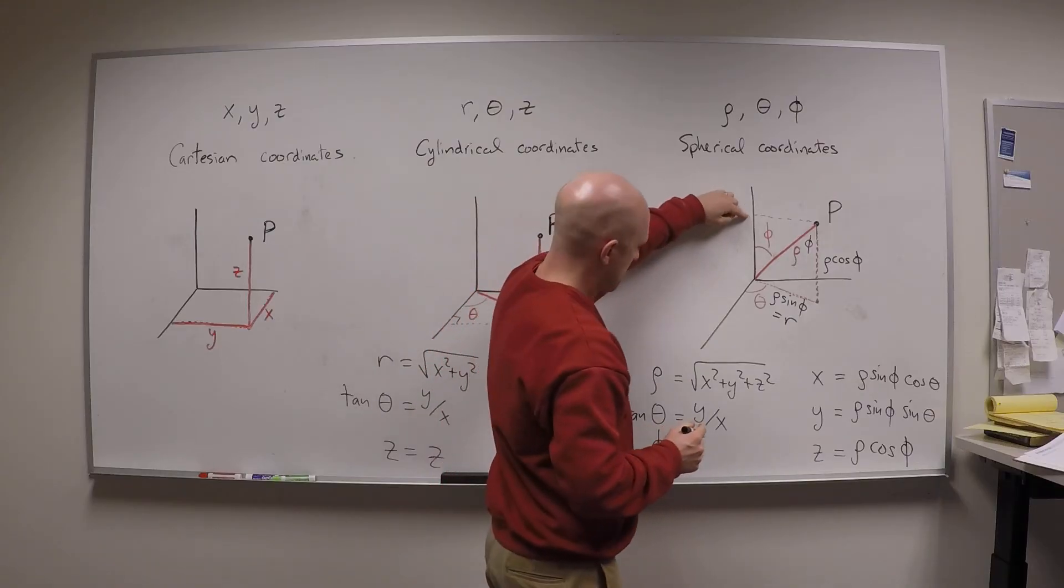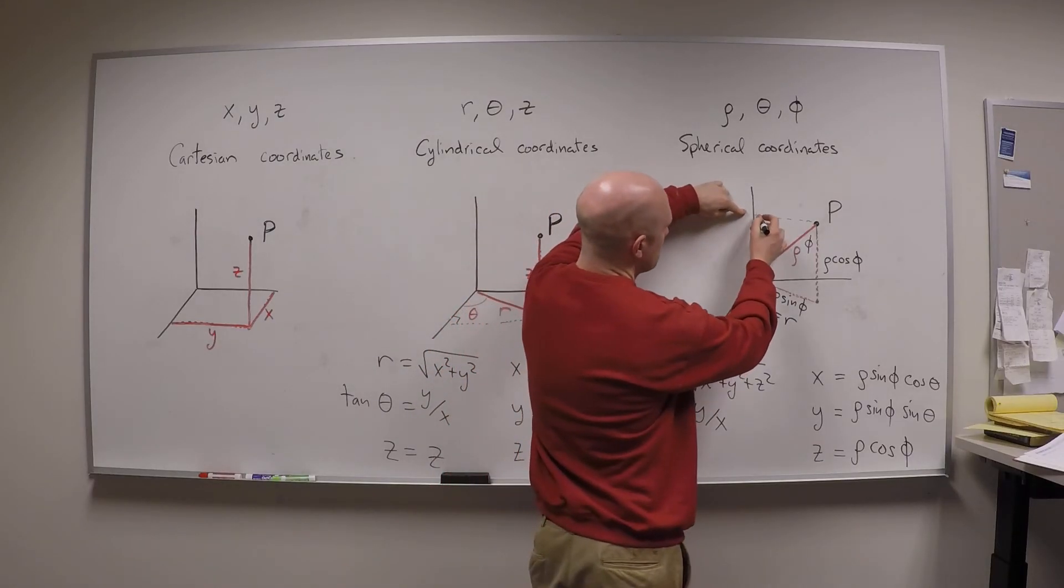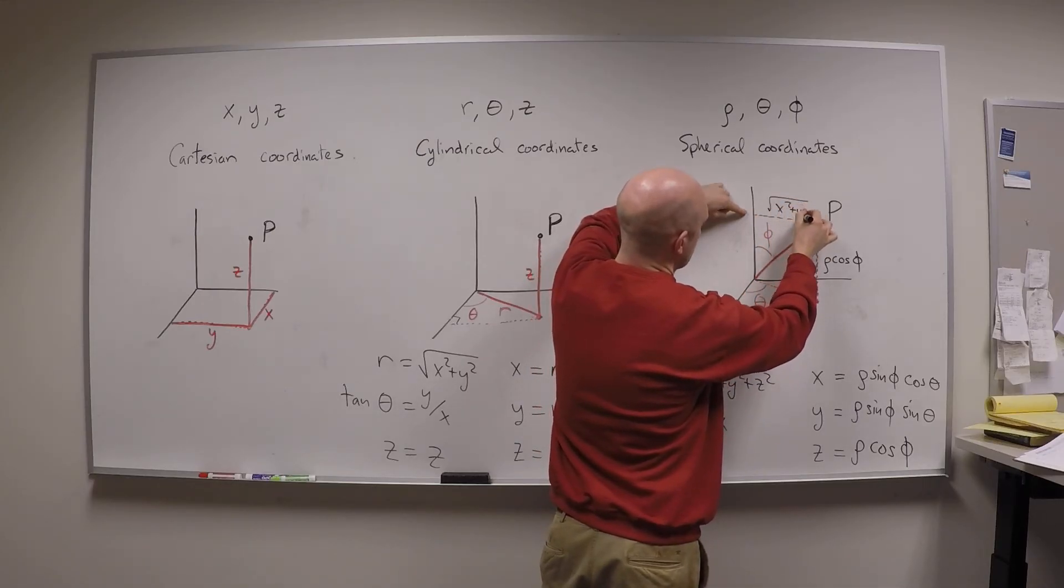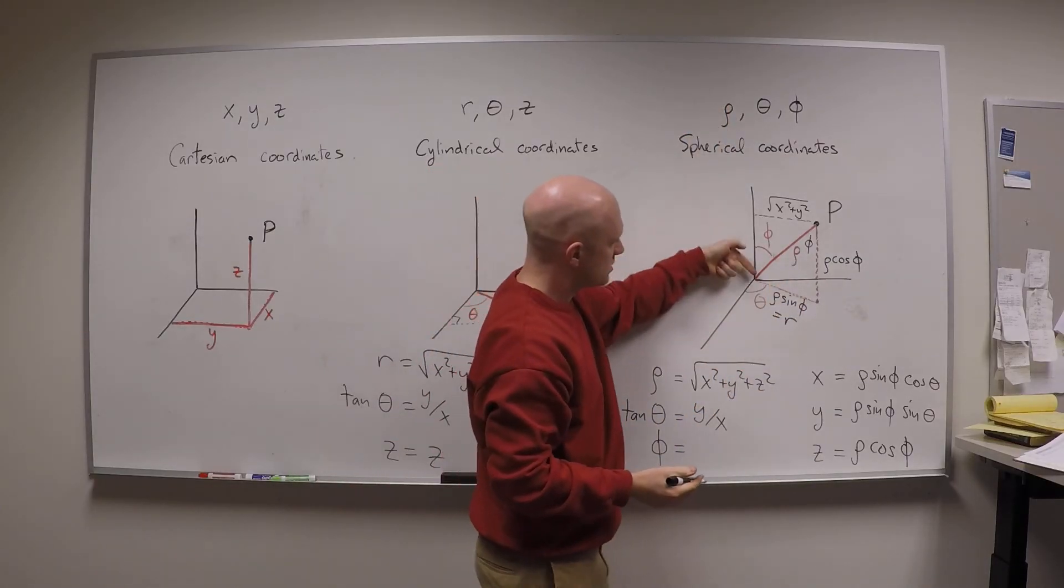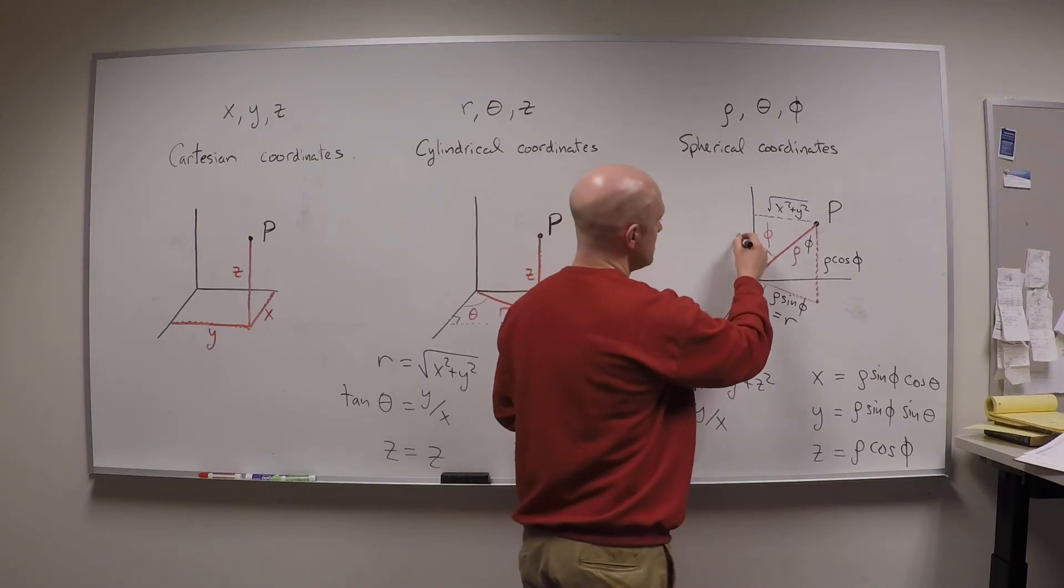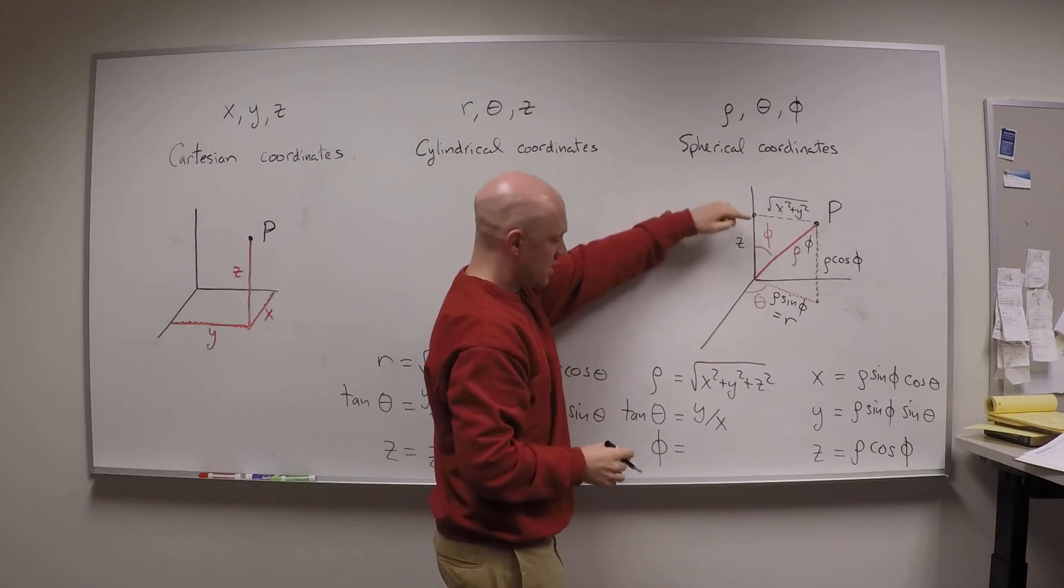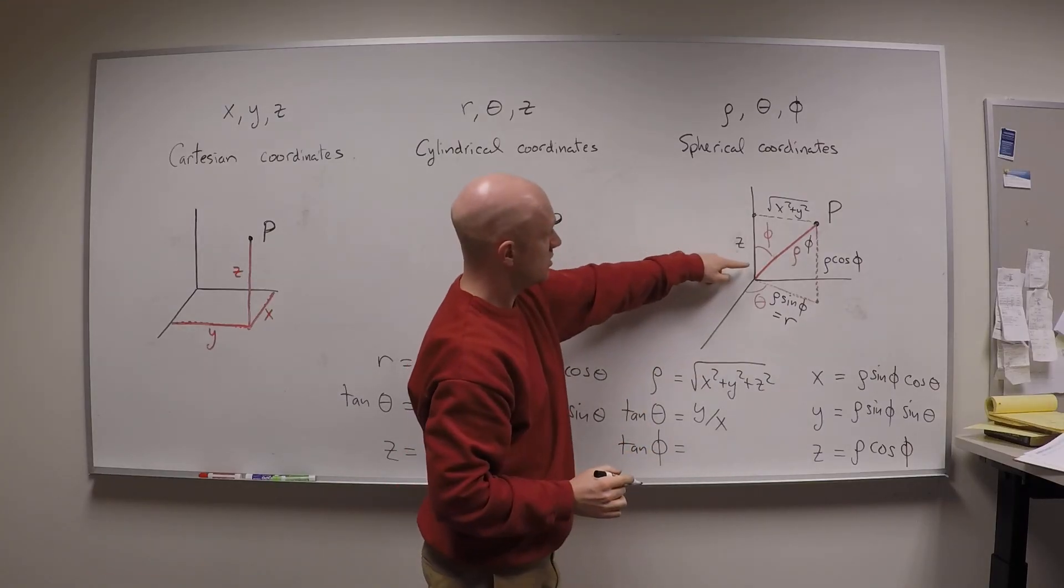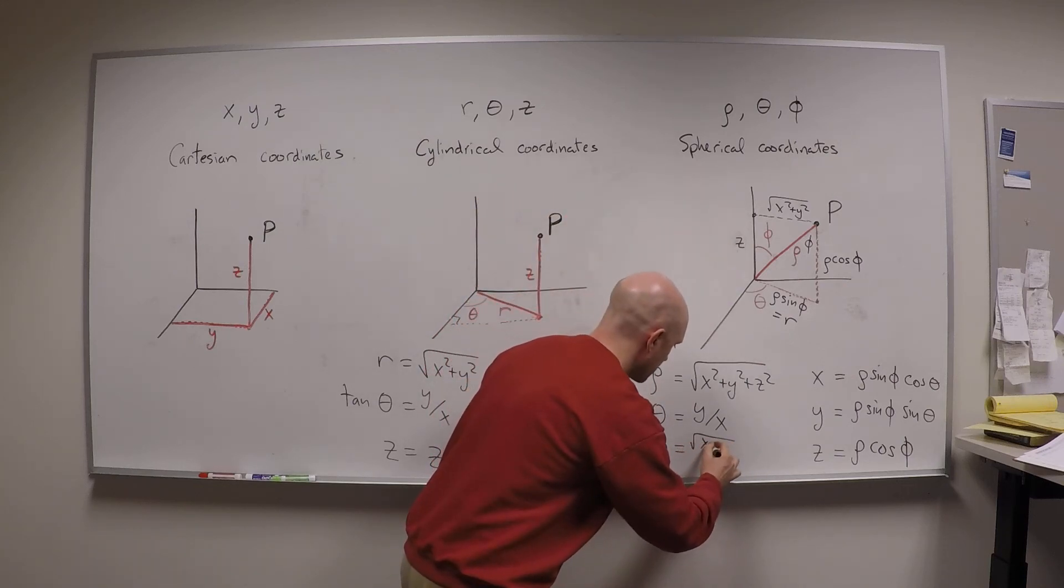Now the final one is phi. Let's think about phi for a minute. I want to know what phi is in terms of these guys. Well, I know what the length of this line is. That's the square root of x squared plus y squared. I can tell you what it is in terms of x and y, because this is the same thing as r down here. This height is z from here to there, and I know this angle is phi, and so I can say that the tangent of phi is the opposite over the adjacent, which is square root of x squared plus y squared over z.